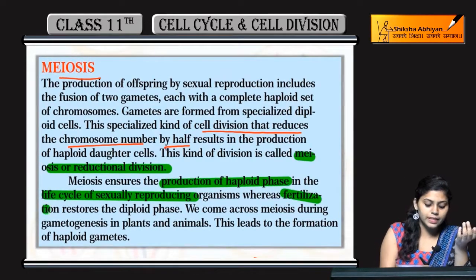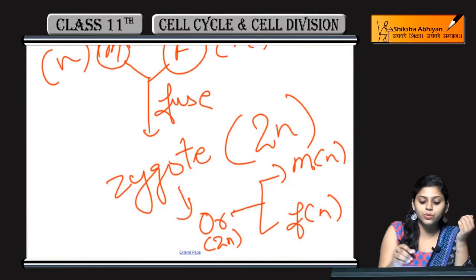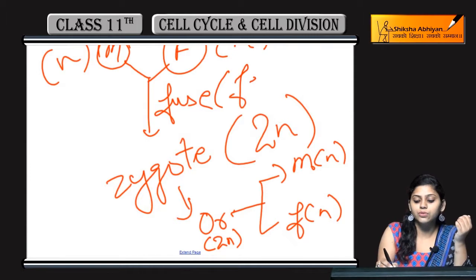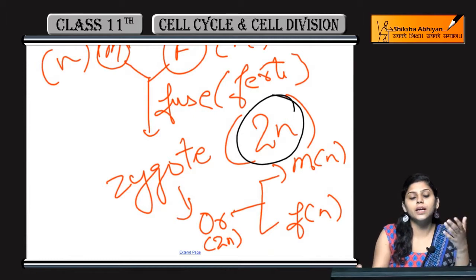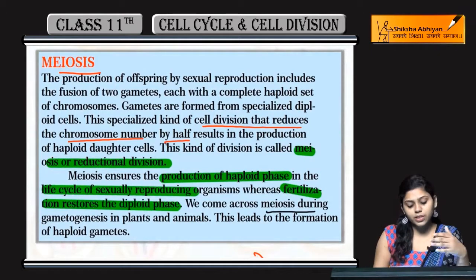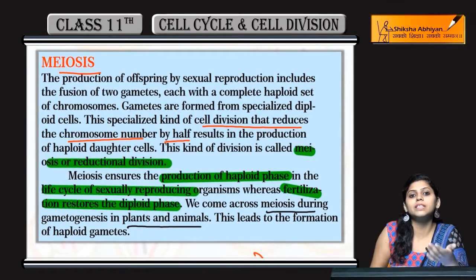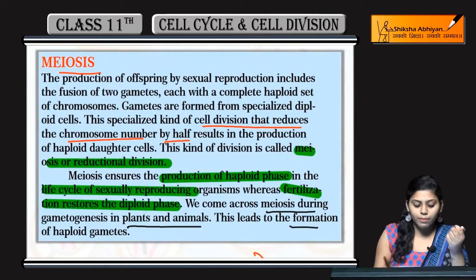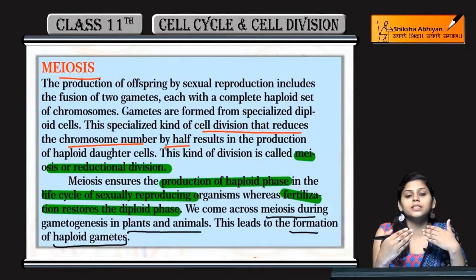Whereas fertilization restores the diploid phase. Male और female gamete fuse होकर fertilization होती है, तो इन्होंने diploid phase को restore किया. Meiosis during gametogenesis in plants and animals — जब gametogenesis हो रही है means meiosis हो रही है. This leads to the formation of haploid gametes. Gametes हमेशा haploid होते हैं.